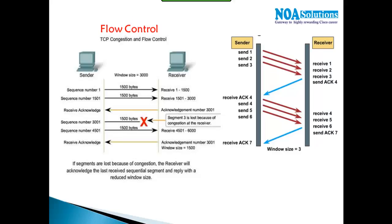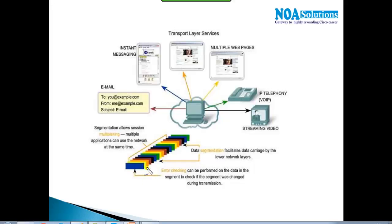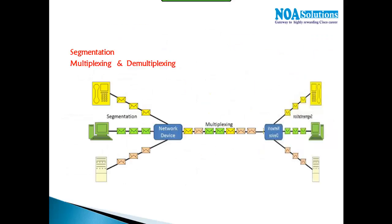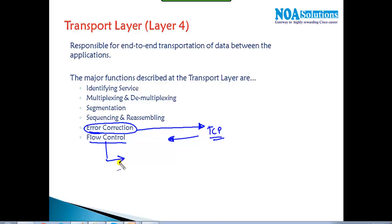If any segment gets dropped during TCP transmission, it will request a resend — this is the TCP congestion control mechanism. Because TCP supports acknowledgements, it can detect dropped segments and retransmit them. To summarize, the transport layer handles segmentation (dividing messages), sequencing and reassembling (ordering segments), multiplexing, error correction (resending dropped packets in TCP), and windowing flow control (defining how many segments to send at one time).